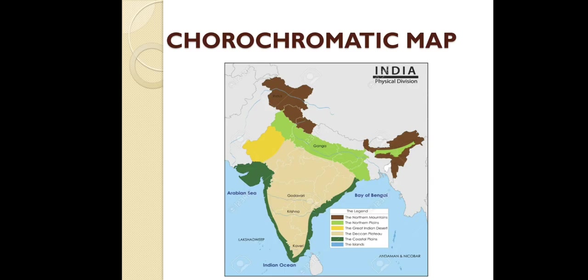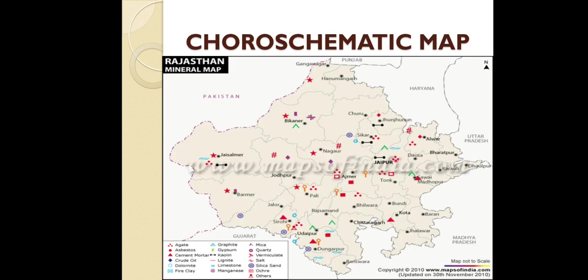In this category, the first is the chorochromatic map, also known as a colour map. It is a qualitative map that defines qualitative areas shown through colours or shades. For example, the physical map of India shown in different colours. Next is the choro schematic map, also a qualitative map, which shows distribution where different objects or phenomena are represented through symbols or letters. For example, the Rajasthan mineral map where minerals are shown by different symbols.